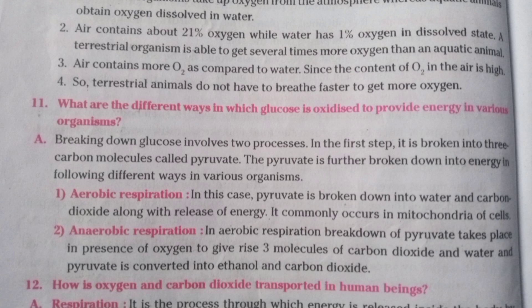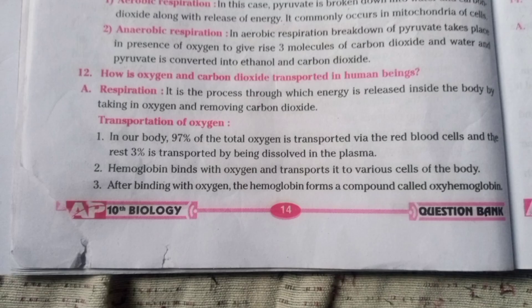What are the different ways in which glucose is oxidized to provide energy in various organisms? Breaking down glucose involves two steps. In the first step, it is broken into three-carbon molecules called pyruvate. The pyruvate is then further broken down in different ways. In aerobic respiration, pyruvate is broken down into water and carbon dioxide along with the release of energy, and this commonly occurs in the mitochondria of cells. In anaerobic respiration, pyruvate is converted into ethanol and carbon dioxide.